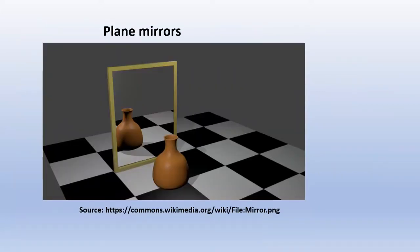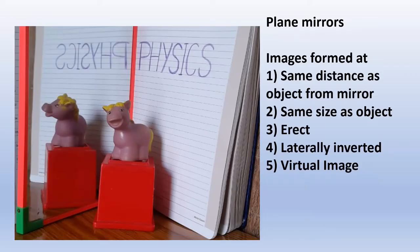Let us revise the characteristics of images formed by plane mirrors. The image will form at the same distance as the object from the mirror. Also, the size of the image is equal to the size of the object. The third characteristic is the images will be erect — that is, the top will remain top and the bottom will remain bottom. The fourth characteristic is the images are laterally inverted — left appears to be right and right appears to be left.